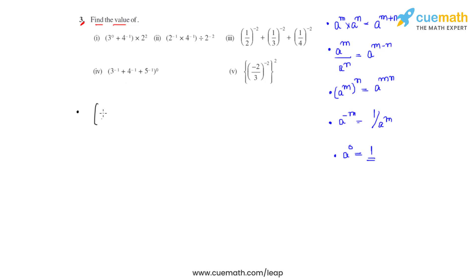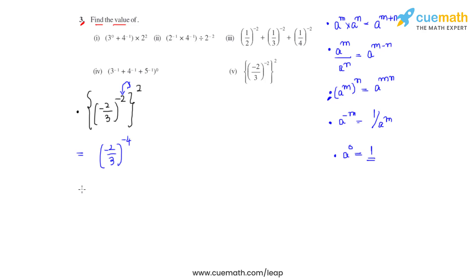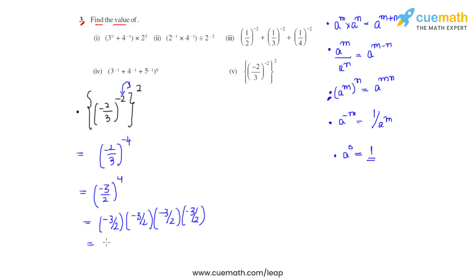The fifth bit is negative 2 over 3 whole raised to negative 2, then raised to 2. Using the law that a raised to m whole raised to n equals a raised to mn, the powers get multiplied: negative 2 times 2 gives negative 4. To make the power positive we flip the fraction, getting negative 3 over 2 whole raised to 4. Multiplying negative 3 over 2 four times gives the answer as 81 over 16.